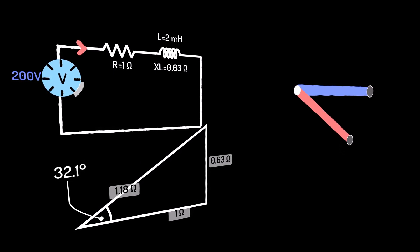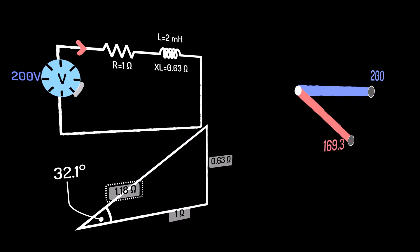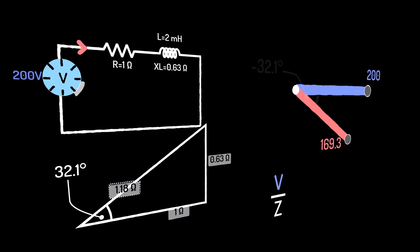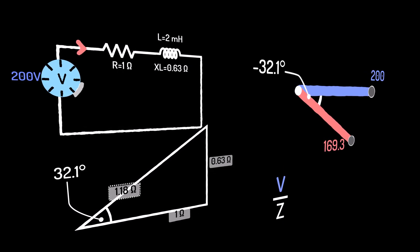In simple terms, the absolute value of the impedance is the ratio of the voltage to current phasors. And the phase of the current relative to voltage is simply the negative of the phase of the impedance.